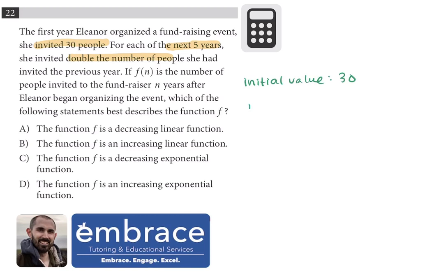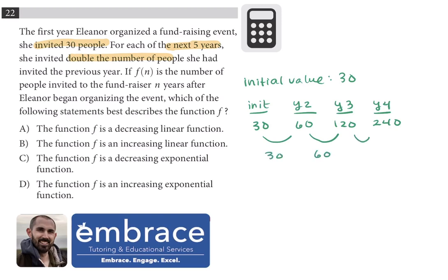Initially we know we have 30 people in year one. Year two we're going to invite double, which is 60. Year three we invite double the year before, so that's 120. Year four, double the year before, that's 240. So the change in people is first 30, then 60, then 120.